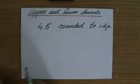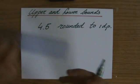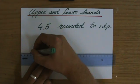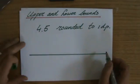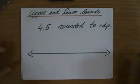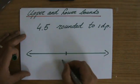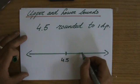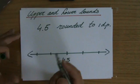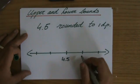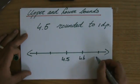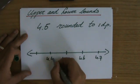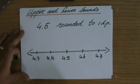Now, how you should approach questions like this is if I would just sketch a number line — that goes on and on until infinity. And there in the middle I'm going to put 4.5, because that's the number we're talking about. Considering we're talking about one decimal place, my next number is going to be 4.6 and then 4.7, and over here it's going to be 4.4, then 4.3.